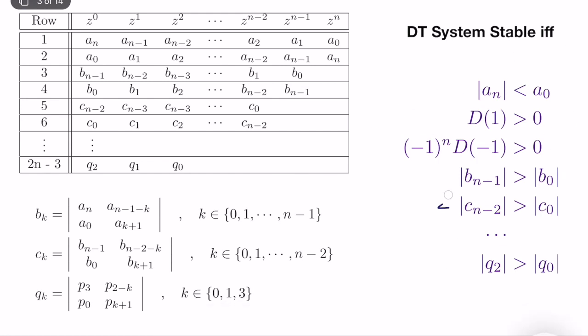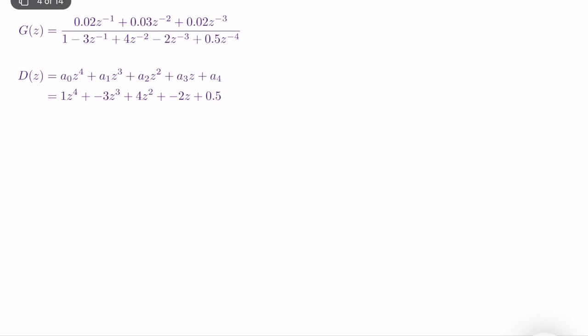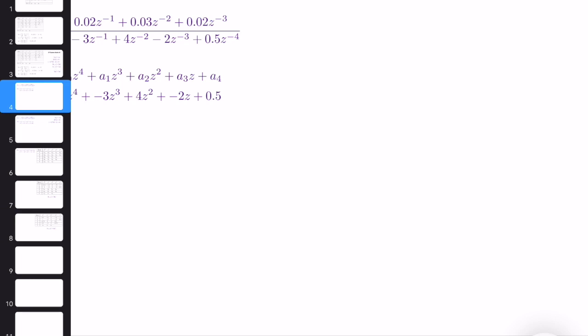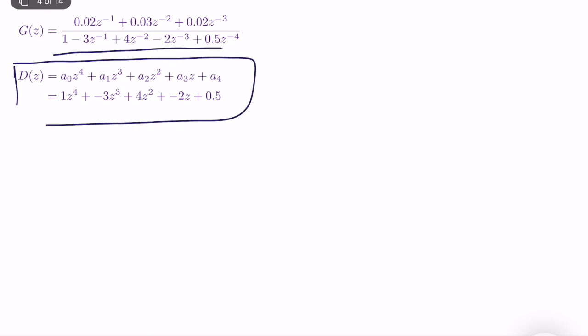Let's solve an example. We already constructed the Jury table for first, second, and third order — now let's check a fourth order system. We have a closed-loop transfer function G(z) and we need to determine if it is stable. Looking at the denominator D(z), we write it in standard form: a0 = 1, a1 = -3, a2 = 4, a3 = -2, and a4 = 0.5.